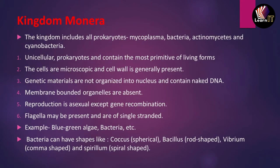Now let us look at the first kingdom: Monera. All members of Monera are prokaryotes. It includes mycoplasma, bacteria, actinomycetes, and cyanobacteria. The characteristics of Kingdom Monera are: they are unicellular prokaryotes and contain the most primitive life forms — meaning they are very ancient. The cells are microscopic, and a cell wall is generally present.